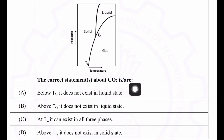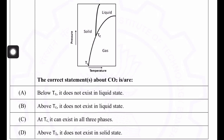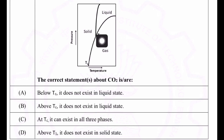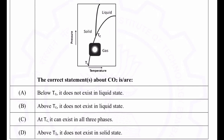Let's see the first option: below Tc. Tc is basically the triple point. We know that the triple point of a substance is the temperature and pressure at which all three phases — solid, gas, and liquid — coexist in thermodynamic equilibrium.